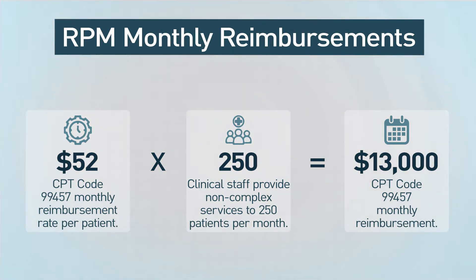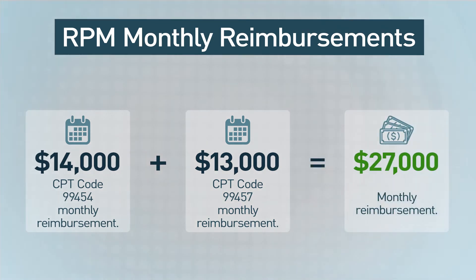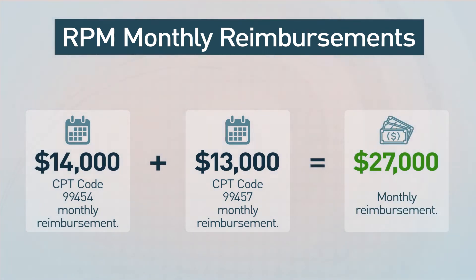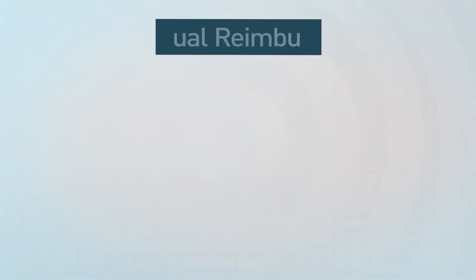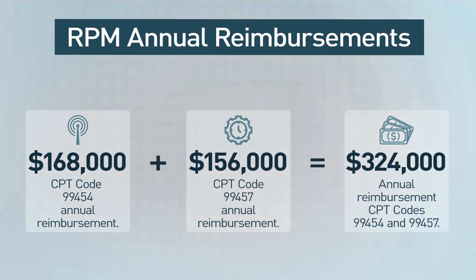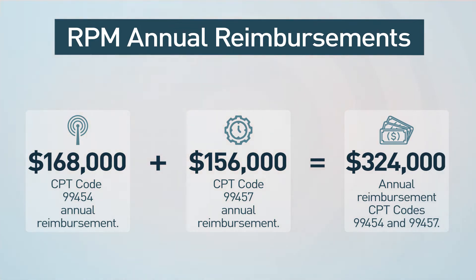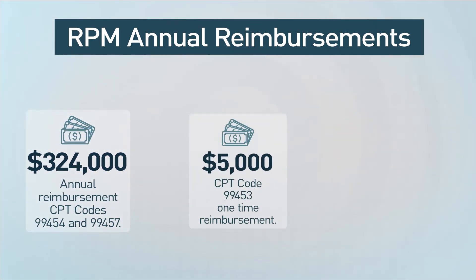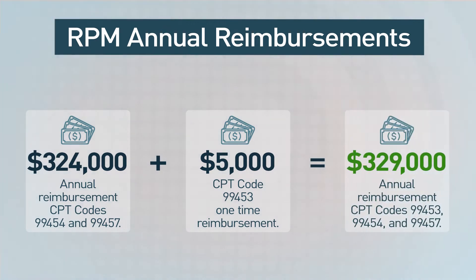So for both of those codes, 99454 and 99457, that's $27,000 in monthly reimbursements. If you recall from earlier in this video, we said that our initial costs were about $25,000 — we've covered the entire cost of the devices in just one month of reimbursements. Looking at the annual reimbursements, for 99454 and 99457, that's $324,000 in annual reimbursement. We also have that one-time device setup and education code, 99453, that will bring it up to $329,000 if all the patients in our practice are participating.